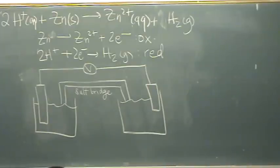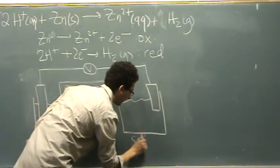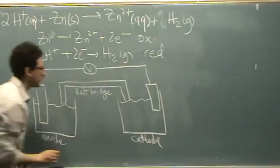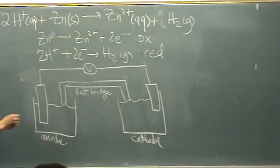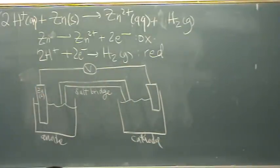The left hand side, the oxidation, the anode, is a little easier, so let's start with that one. So for this one, we have a zinc, and that's a solid, right there.